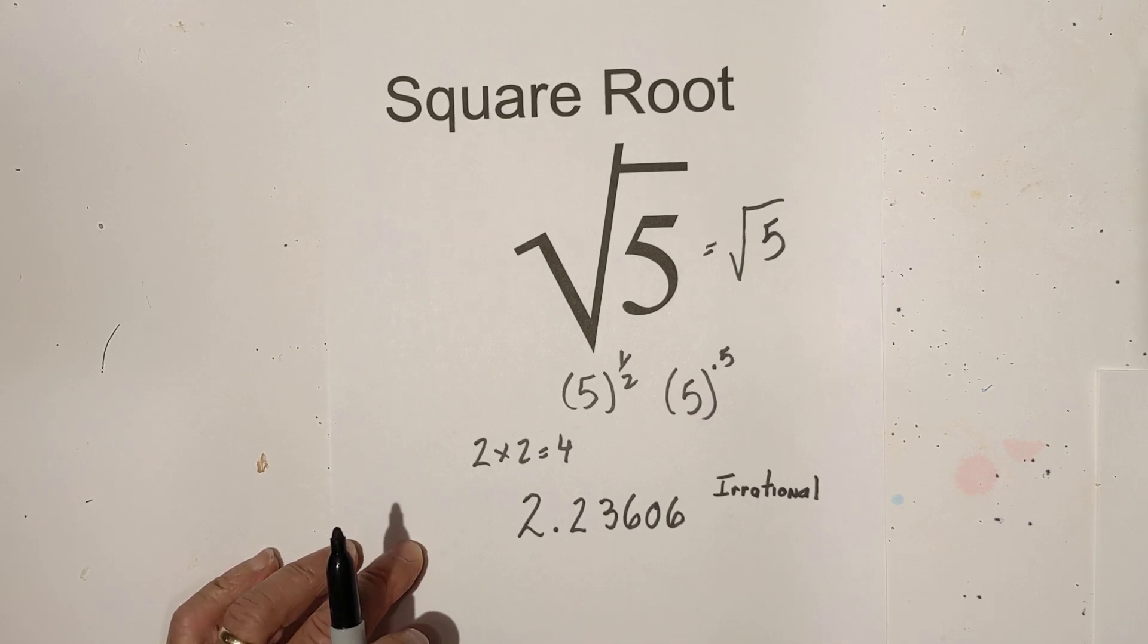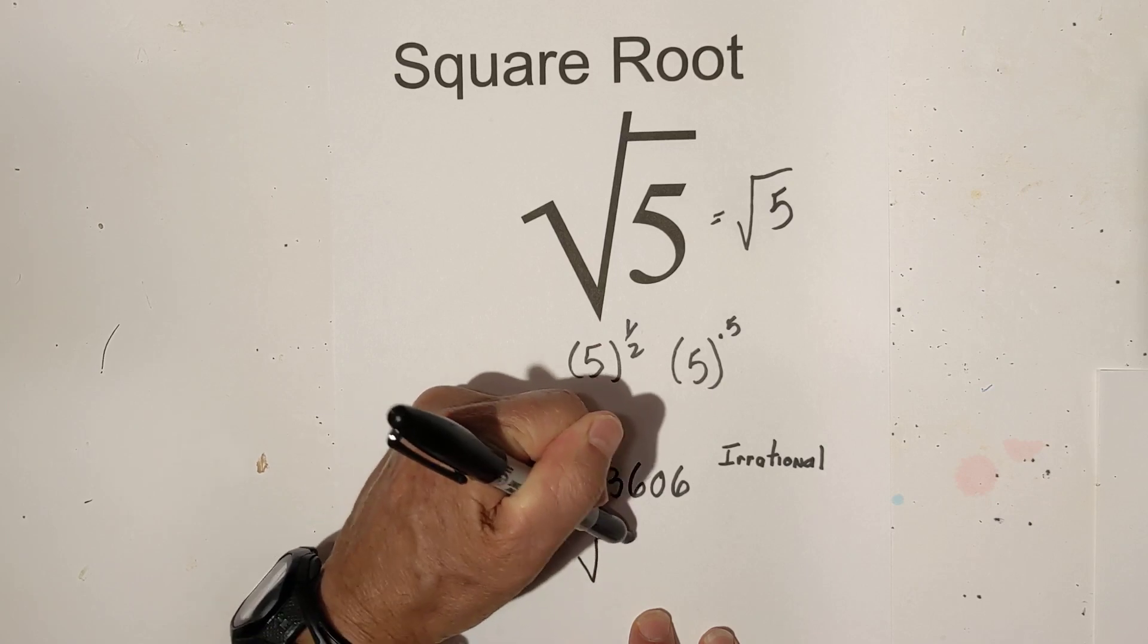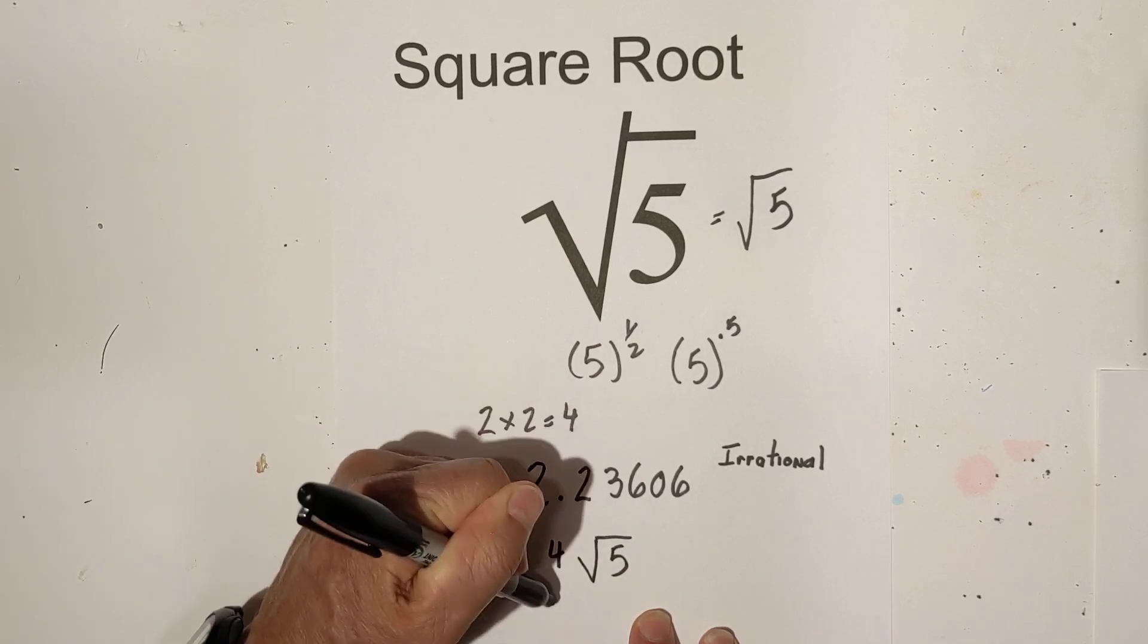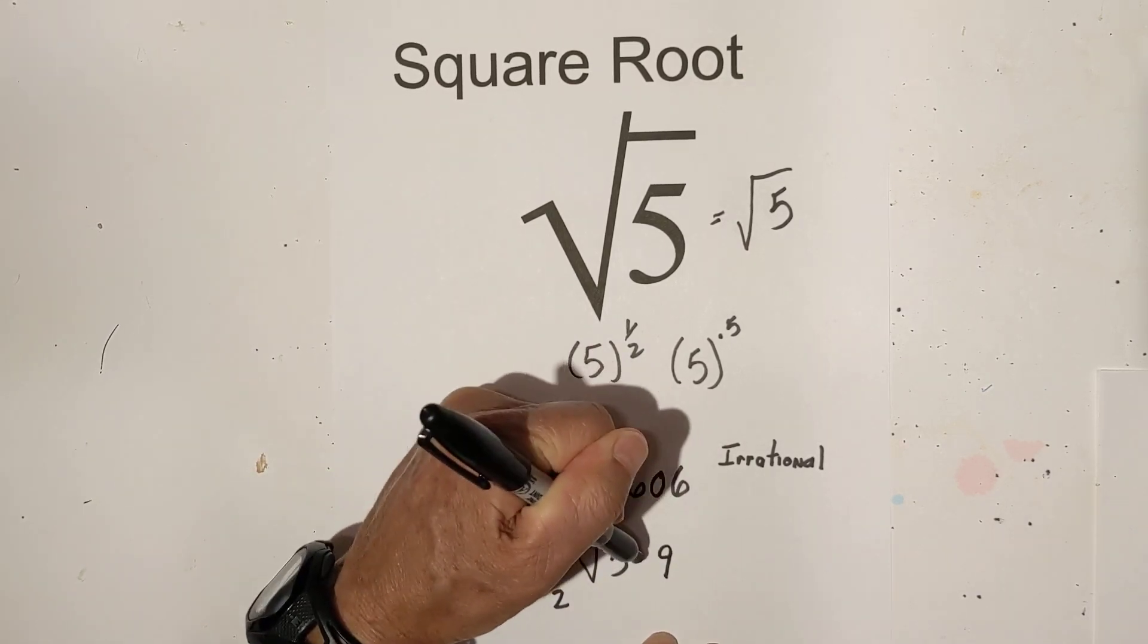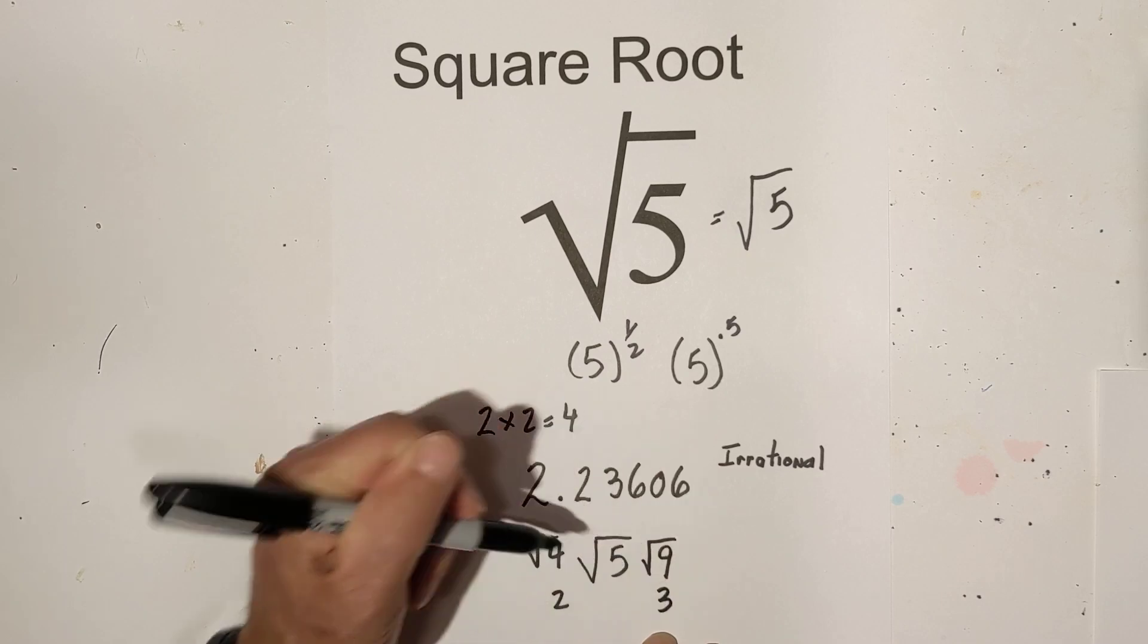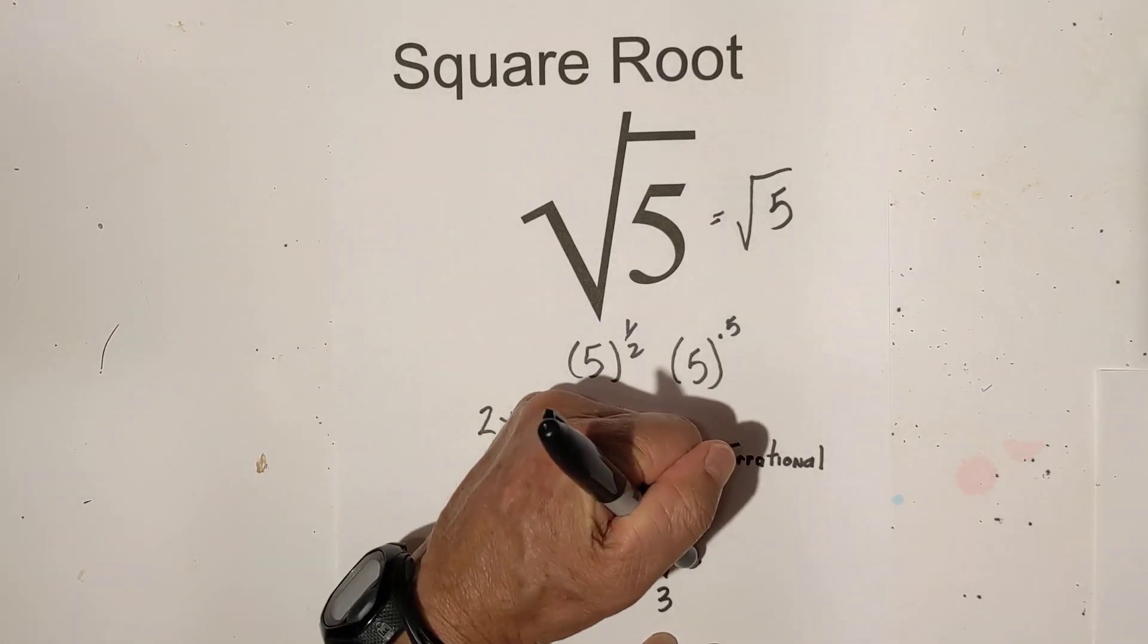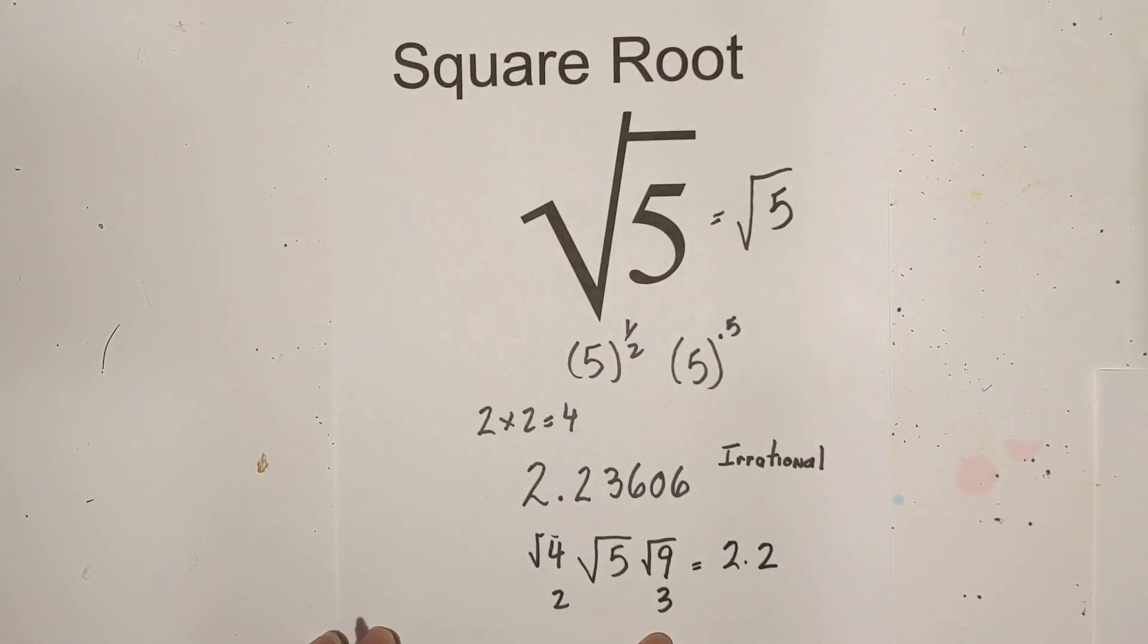So it's an irrational number. Now here's a little trick if you want to estimate the square root of 5. You know that you have the square root of 4, which is 2, on one side, and the square root of 9 on the other, which is 3. So the square root of 5 is going to be somewhere between 2 and 3. It's close to 4, so I would just estimate 2.2, and that'll get you pretty close.